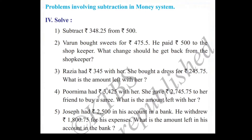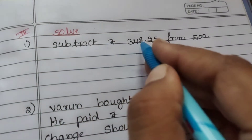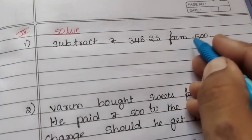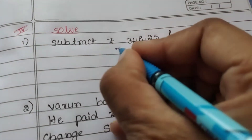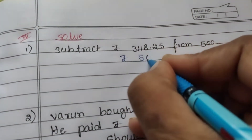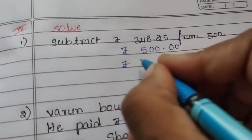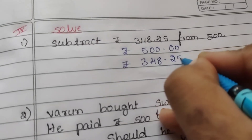Next main — problems involving subtraction in money system. 4th main, solve. First question: Subtract Rs. 348.25 from 500. So from 500, we subtract 348.25. Rs. 500.00 minus Rs. 348.25.